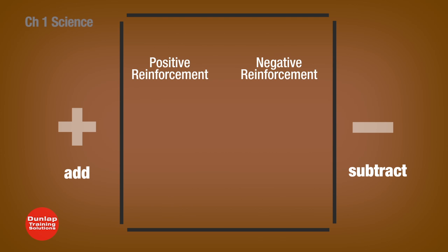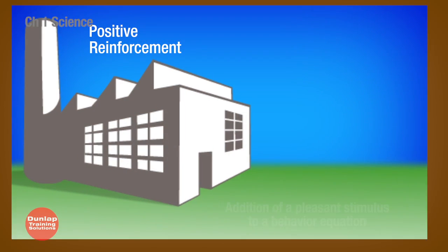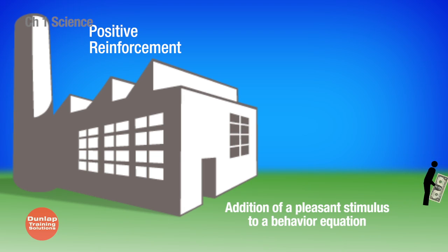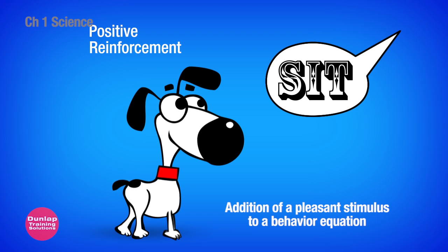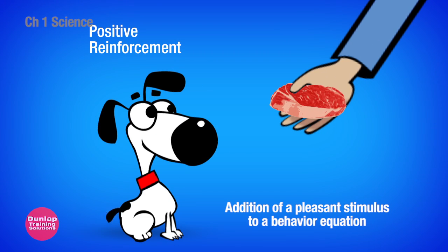We have two ways of reinforcing behaviors and two ways to punish behaviors. Here are examples from each of the four areas. Positive reinforcement is the addition of a pleasant stimulus to a behavior equation. For example, you get a paycheck for going to work, so you'll most likely return to work next week. A dog does something we like, we give it a reward, and the dog is more likely to repeat that behavior in the future.